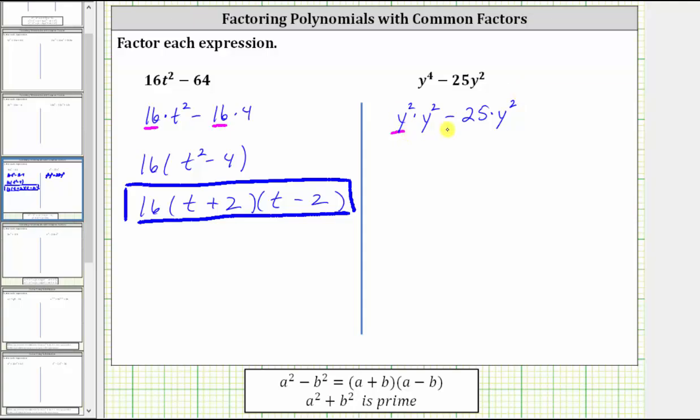And we can see if we factor out y squared, we'll be left with y squared minus 25. So the first step is to factor out y squared, which leaves us with y squared minus 25.